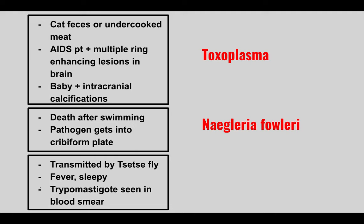The next patient has an infection transmitted by the tsetse fly. They're going to be febrile and sleepy, and we see trypomastigotes in the blood smear. This is T. brucei, known as African sleeping sickness — they get very sleepy.